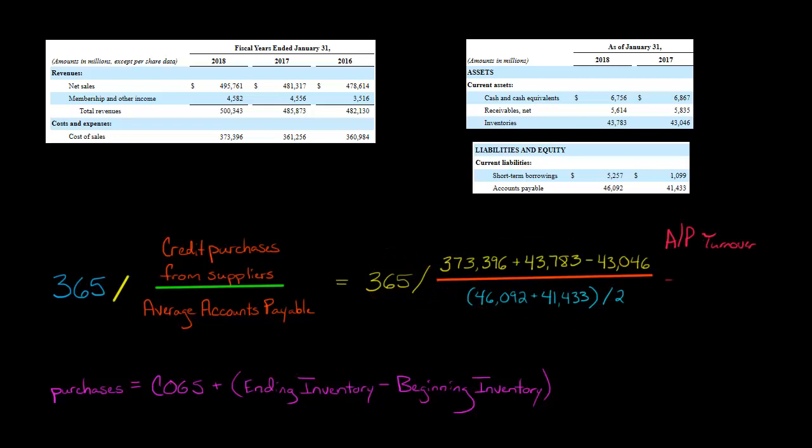And that's going to give us, if you round, 42.7. And that's 42.7 days. So that means that on average, it takes Walmart close to 43 days to pay off its average accounts payable balance, to pay off all its suppliers. It takes them about a month and a half.